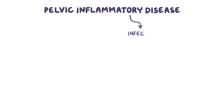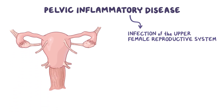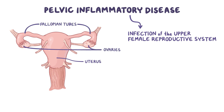Pelvic inflammatory disease, or PID, is an infection of the upper female reproductive system, including the uterus, fallopian tubes, and ovaries. It can cause a number of serious complications, including infertility.